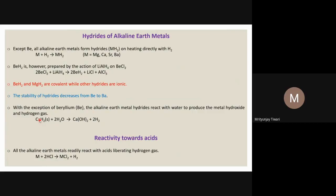H⁻ is a very strong base. Water is an amphoteric molecule — it has both basic and acidic character. The strong base H⁻ abstracts H⁺ from water. The two H⁻ ions combine with two H⁺ from water to form H₂ gas, while the remaining OH⁻ ions combine with calcium to form calcium hydroxide. This is essentially a double displacement reaction.